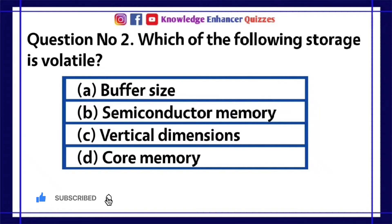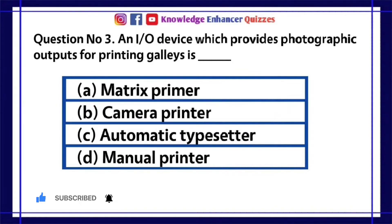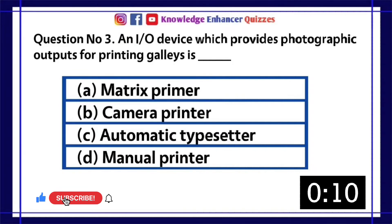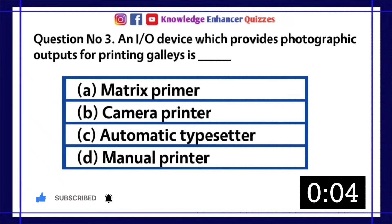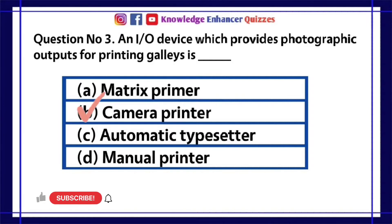Option B is the right answer. Question number 3. An I-O device which provides photographic outputs for printing galleys is dash? A. Matrix Printer. B. Camera Printer. C. Automatic Type Setter. D. Manual Printer. Option B is the right answer.